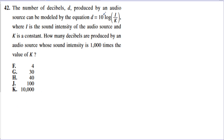Problem 42 is a logarithm problem — an algebra two topic. If you haven't seen log yet, we'll explain it here. The problem says the number of decibels D produced by an audio source can be modeled by D equals 10 times the log of I over K, where I is the sound intensity and K is a constant. The question asks how many decibels are produced by an audio source whose sound intensity is 1,000 times more than K.